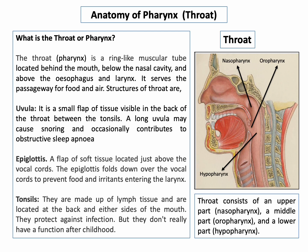Key structures of the throat: Number one, the uvula — a small flap of tissue visible in the back of the throat between the tonsils; a long uvula may cause snoring and occasionally contributes to obstructive sleep apnea. Number two, the epiglottis — a flap of soft tissue just above the vocal cords that folds down to prevent food and irritants from entering the larynx. Number three, the tonsils — made up of lymphoid tissue, located at the back and either side of the mouth; they protect against infection but don't really have a function after childhood.